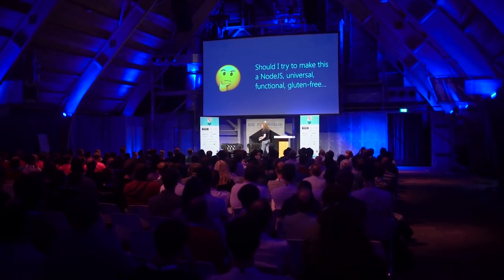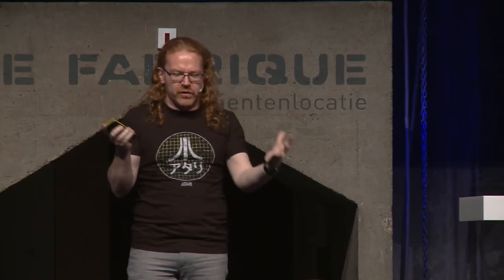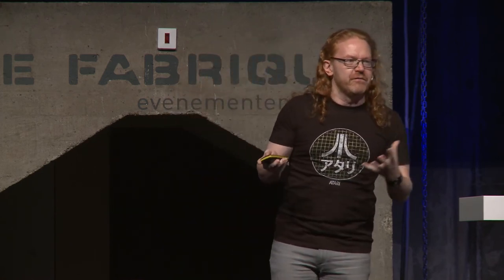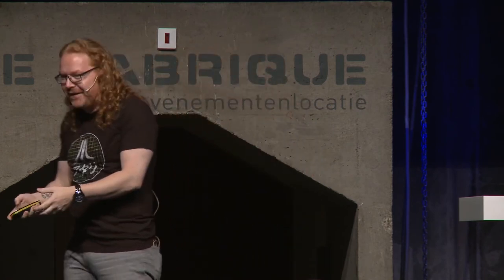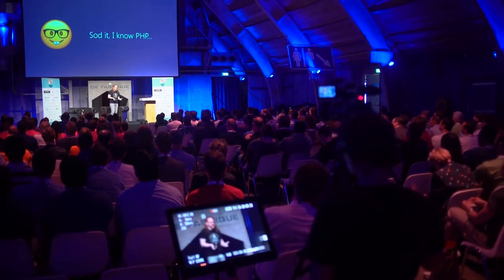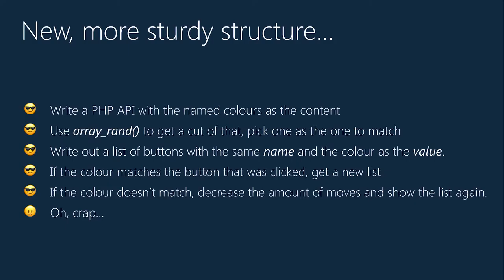Then I thought: JavaScript runs on the server — I can use Node.js, I can do universal JavaScript, make it functional and gluten-free for every environment. But then I thought: I know PHP, so let's write a PHP version of the game as well — which I didn't do offline on a plane this time but at home on localhost. Using PHP, I wrote a PHP API with the color names, used array_rand to get a selection, and picked one to match.